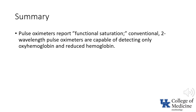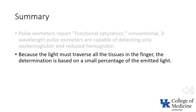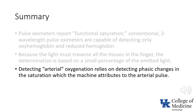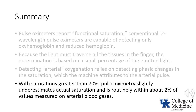In summary, pulse oximeters report functional saturation. Conventional two-wavelength pulse oximeters are capable of detecting only oxygenated hemoglobin and reduced hemoglobin. Because the light must traverse all the tissues in the finger, the determination is based on a small percentage of the emitted light. Detecting arterial oxygenation relies on detecting phasic changes in the saturation, which the machine attributes to the arterial pulse. With saturations greater than 70%, pulse oximetry tends to slightly underestimate the actual saturation, but is routinely within about 2% of values measured on arterial blood gases.